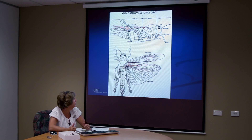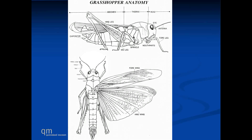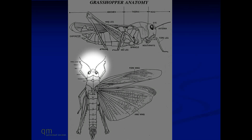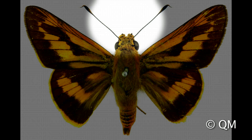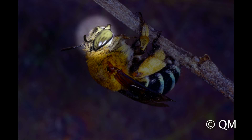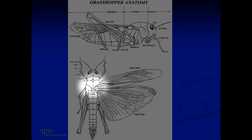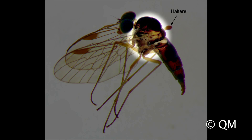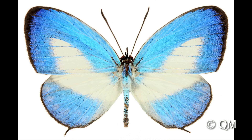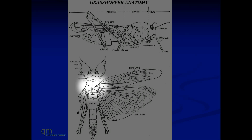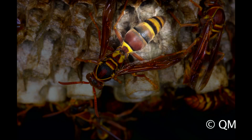Insects actually have a head which contains the antennae, the eyes, and the mouthparts underneath. A thorax which has three pairs of legs and, on occasion, two pairs or four wings. And then the abdomen is made up of between five and thirteen segments.